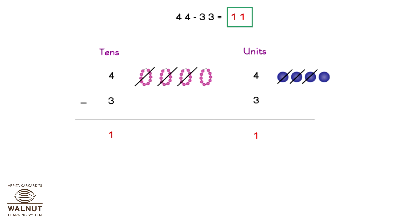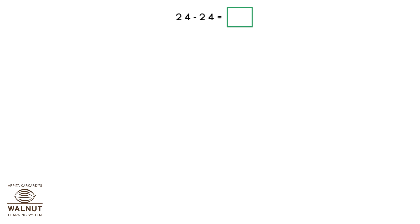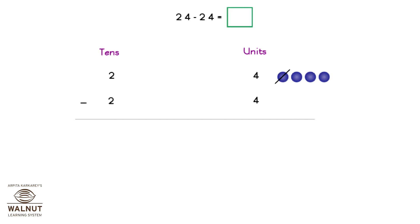For 24, we have two tens and four units. And for the other number, 24, we have two tens and four units. We subtract the units and then we subtract the tens. The number that we have is zero tens and zero units, which is zero. That is the answer. So 24 minus 24 is equal to zero.